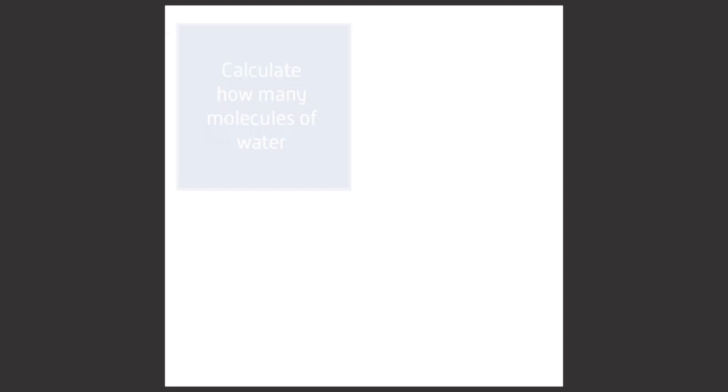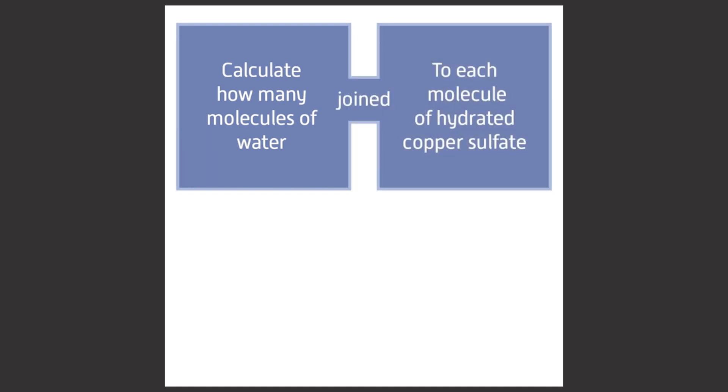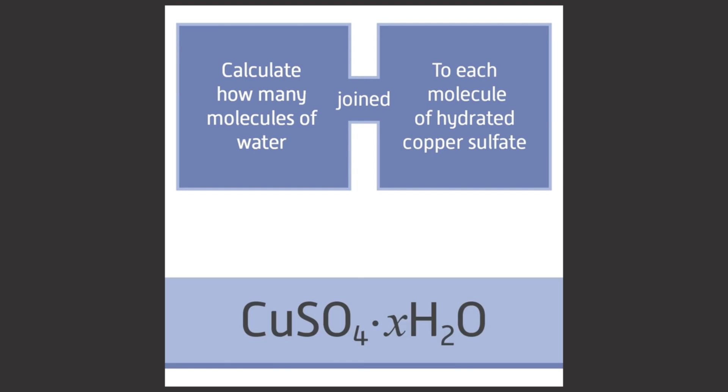For higher tier students, you may want to calculate how many molecules of water are joined to each molecule of hydrated copper sulfate. The formula of hydrated copper sulfate is known as CuSO4·xH2O. The x refers to the unknown number of water molecules.